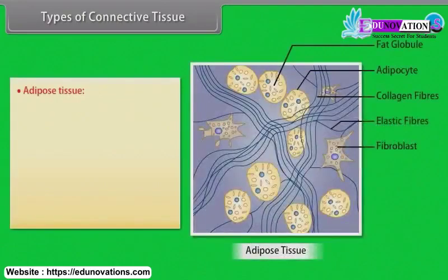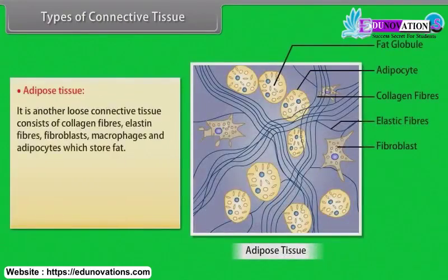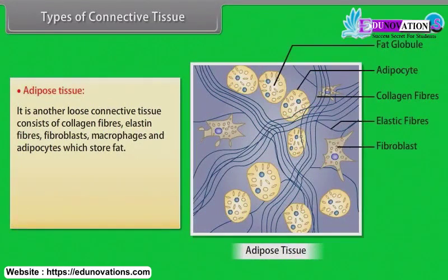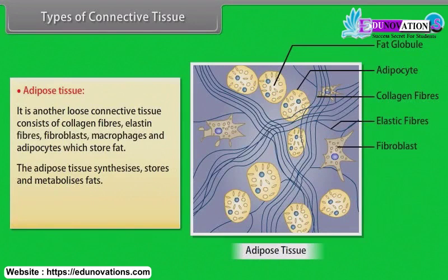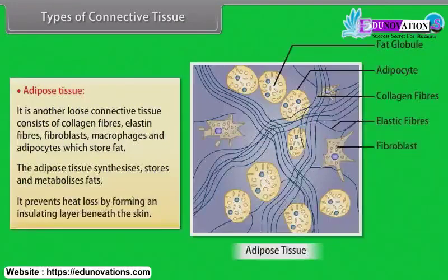Adipose tissue is another loose connective tissue. It consists of collagen fibers, elastin fibers, fibroblasts, macrophages and adipocytes which store fat. The adipose tissue synthesizes, stores and metabolizes fats. It also prevents heat loss by forming an insulating layer beneath the skin.